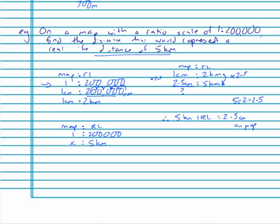What did I do to 200,000 to get 5? I'm going to have been dividing by something really big or multiplying by something really small. Change this first to centimetres. So 5 kilometres times 1,000 is 5,000 metres. Let's times by another 100 to get to centimetres.